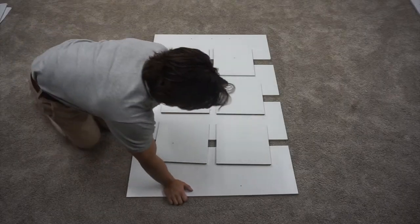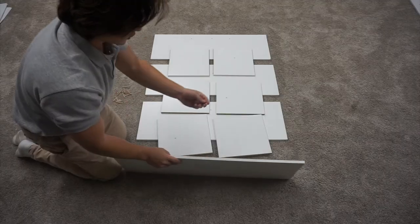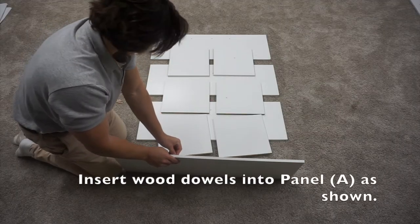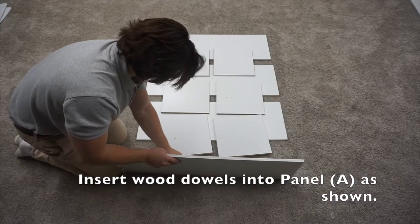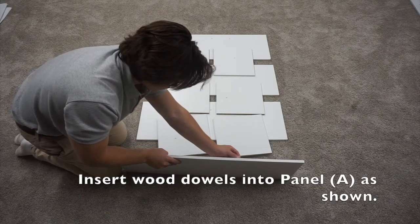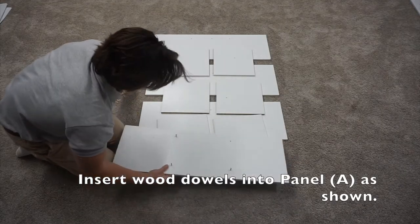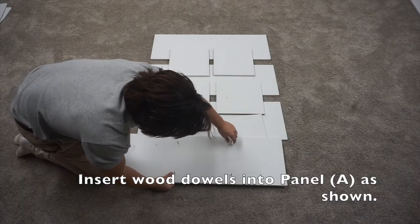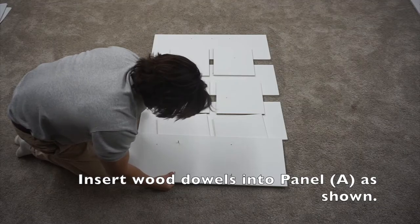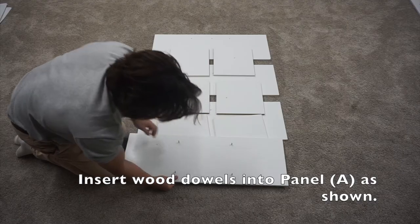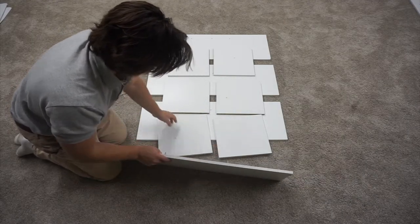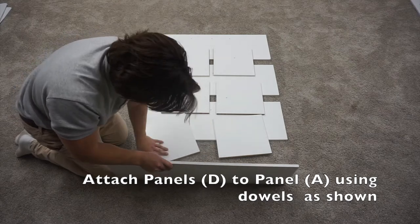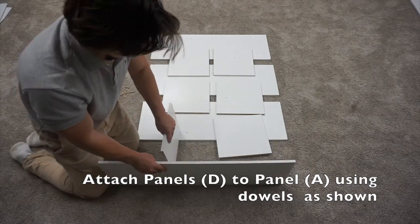Start by taking one of your A panels and inserting four small dowels into the pre-drilled holes. Next, take your two D panels and attach them to the A panel.